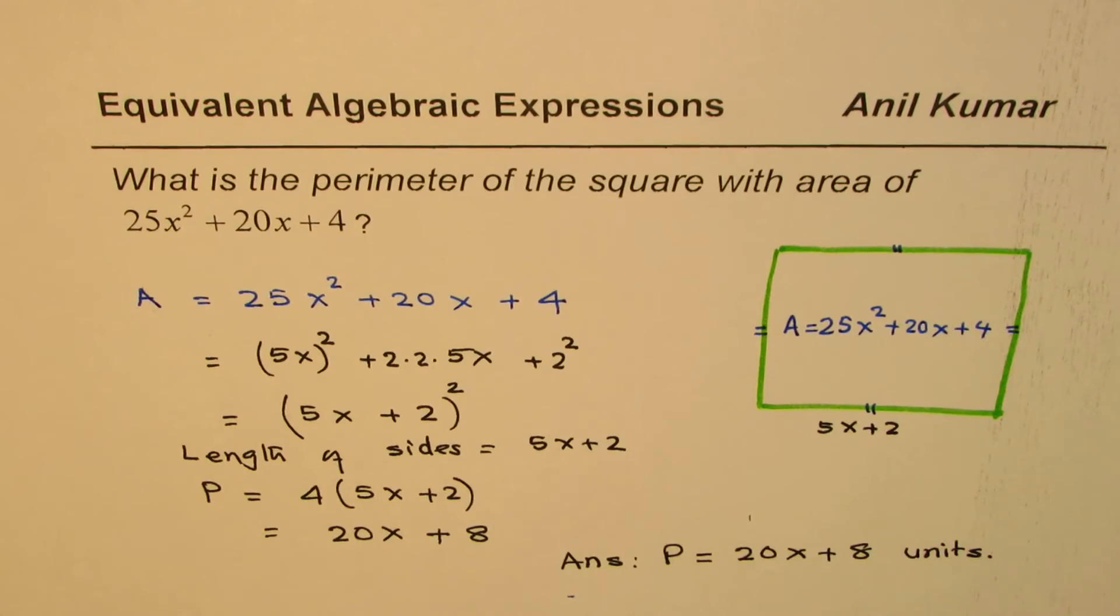So that is how we can find the perimeter of a square whose area is given in algebraic expression form. I'm Anil Kumar, and I hope that helps. Thank you and all the best.